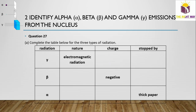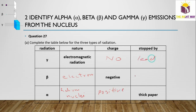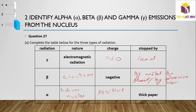Question 27 table: Complete the table for the three types of radiation. Gamma rays are electromagnetic radiation with no charge, stopped by lead. Beta particles are electrons with negative charge, stopped by a thin sheet of metal such as aluminum. Alpha particles are helium nuclei with positive charge, stopped by a sheet of paper.